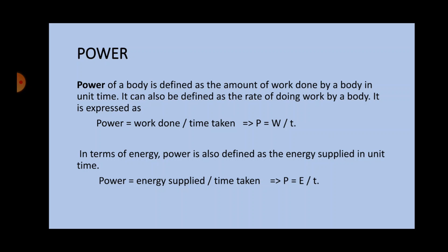Next is power. Power of a body is defined as the amount of work done by a body in unit time. It can also be defined as the rate of doing work by a body. So, power can be expressed as work done divided by time taken, which is P equal to W by T. As energy and work are equivalent, we can also define power in terms of energy supplied: power is equal to energy supplied divided by time taken, which implies P equal to E by T.